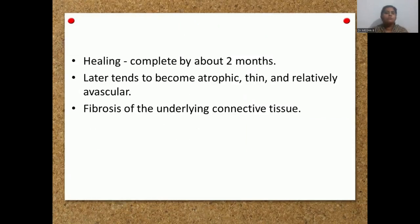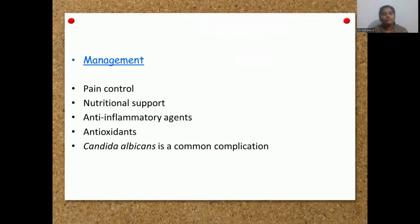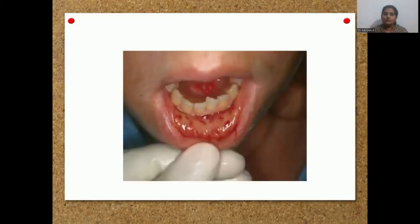Once the radiotherapy proceeds and completes, within two months the mucosa starts healing by itself. Later on it becomes atrophic, thin, and relatively avascular, and fibrosis of the underlying connective tissue happens. Management is mainly pain control. Nutritional support is provided since oral hygiene status and nutritional intake are compromised. Anti-inflammatory agents and antioxidants can be given. Mucositis can also cause superimposed candidal infection, so antifungal agents are given along with anti-inflammatory agents.